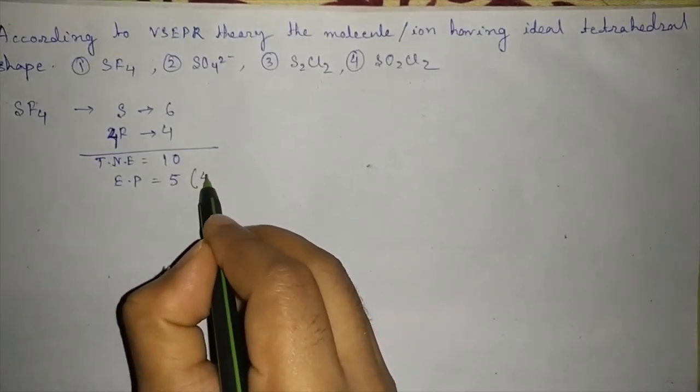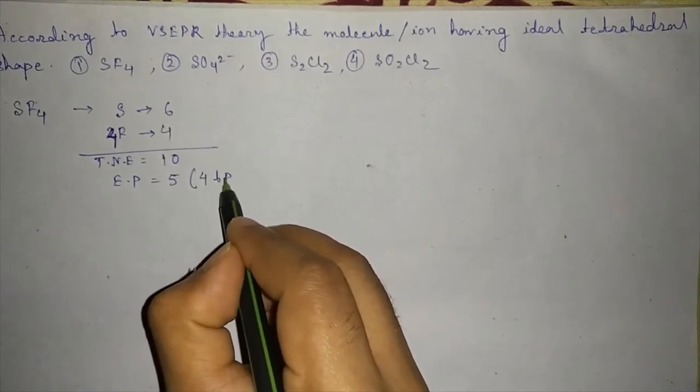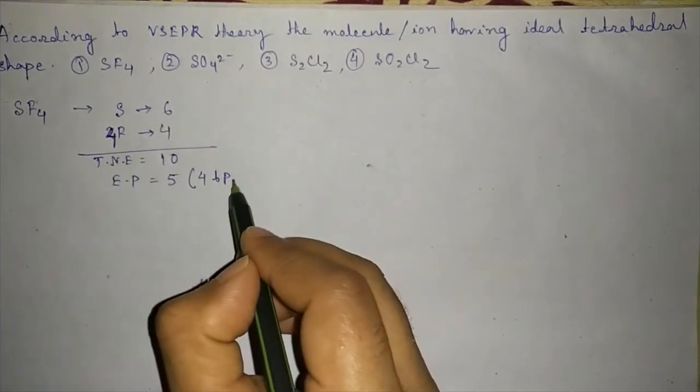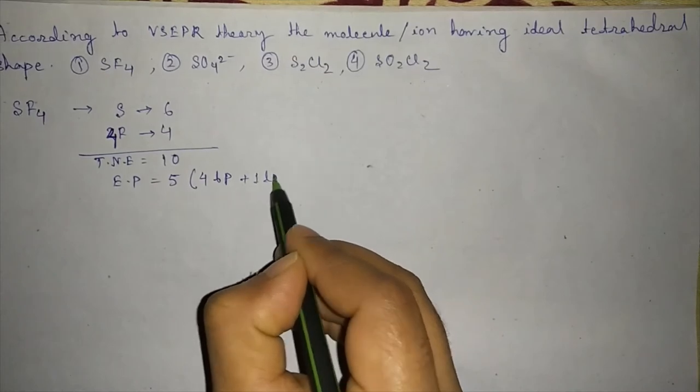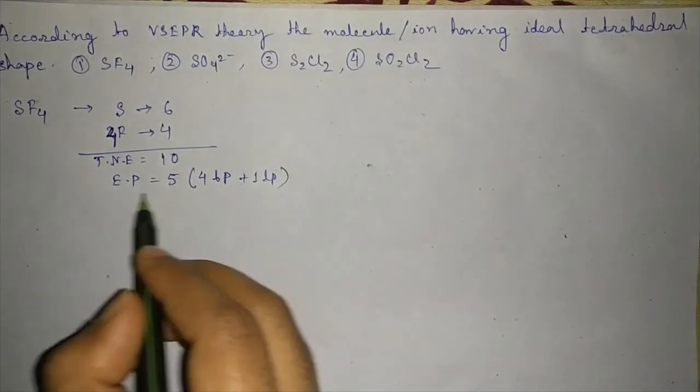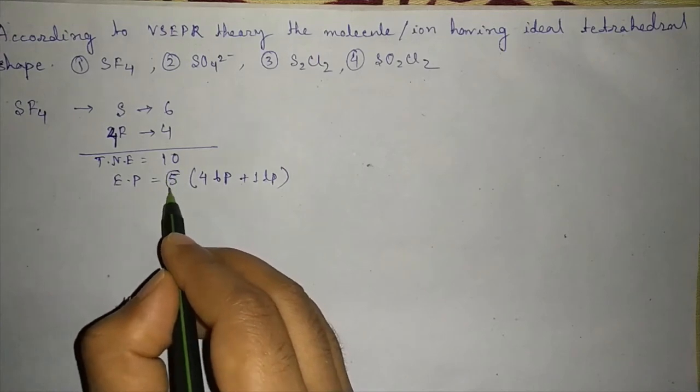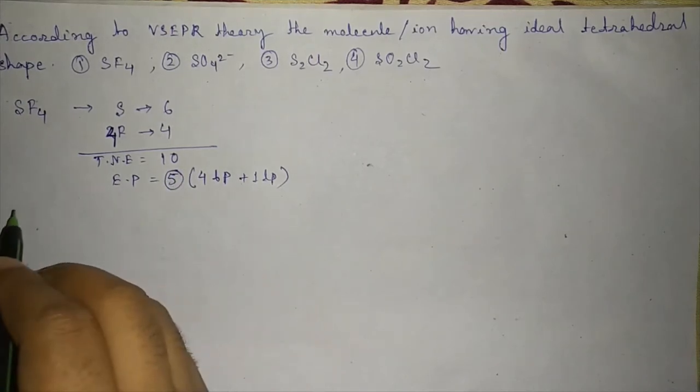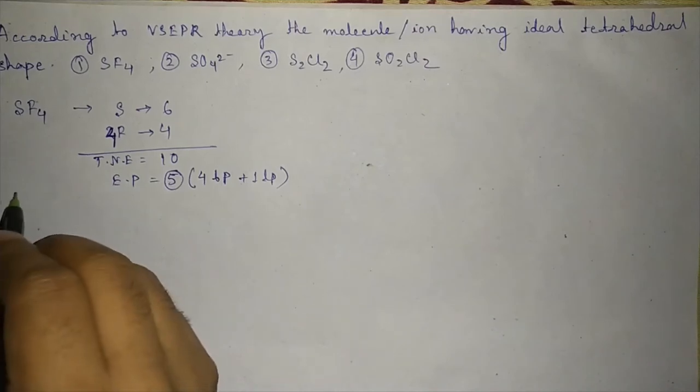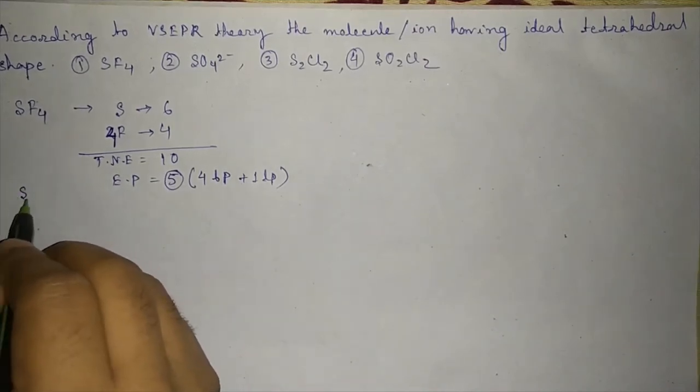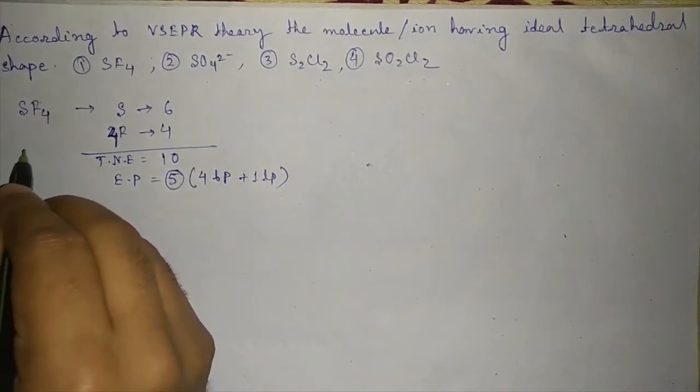So four bond pairs for four fluorine atoms and one lone pair, so its hybridization will be sp3d as 5 electron pairs are there. The structure will be S, F,